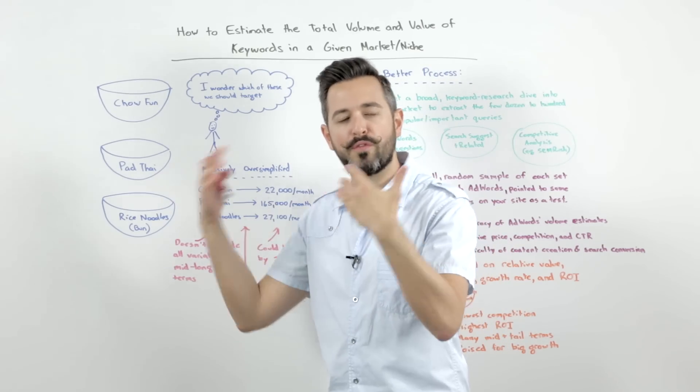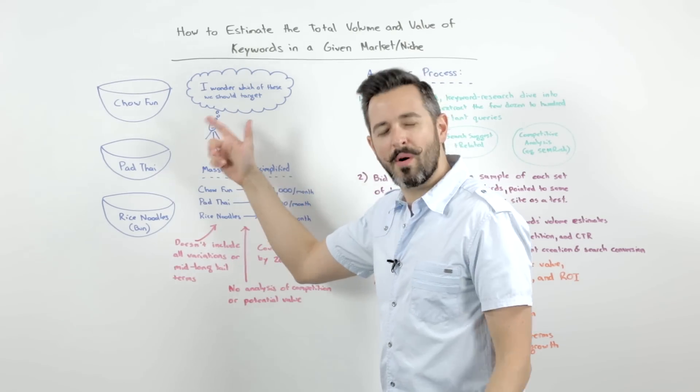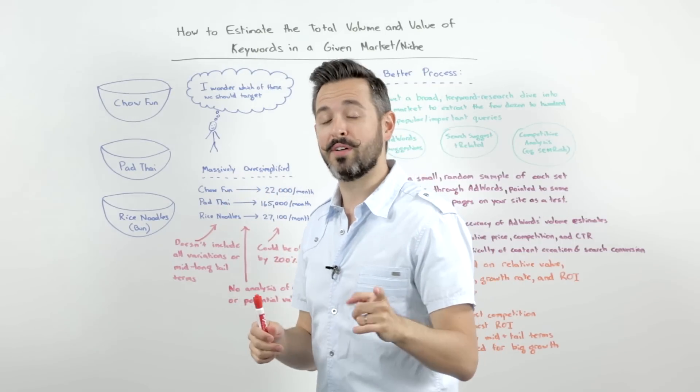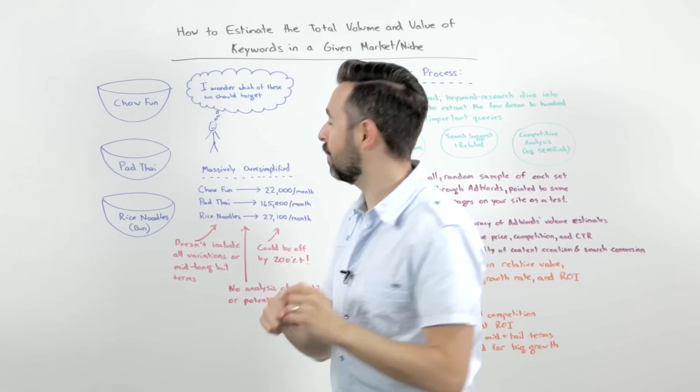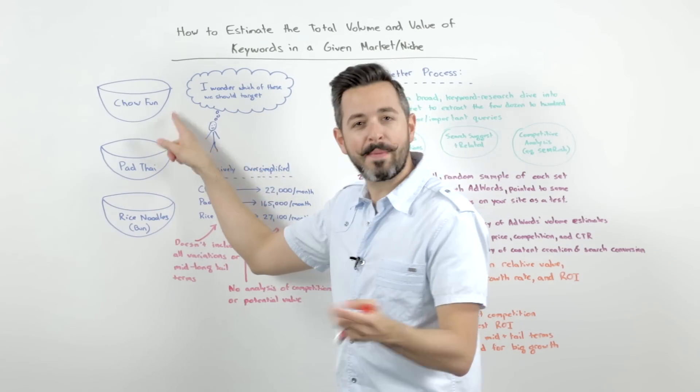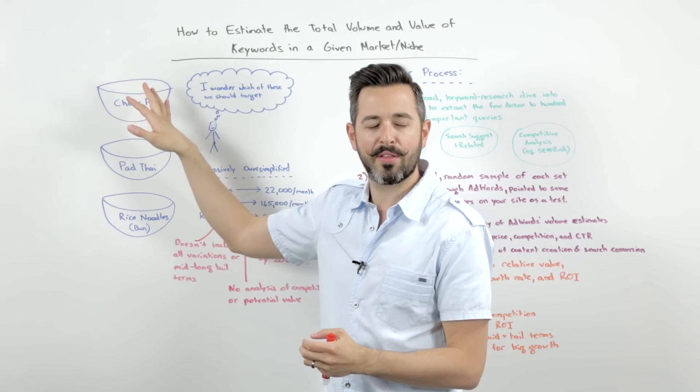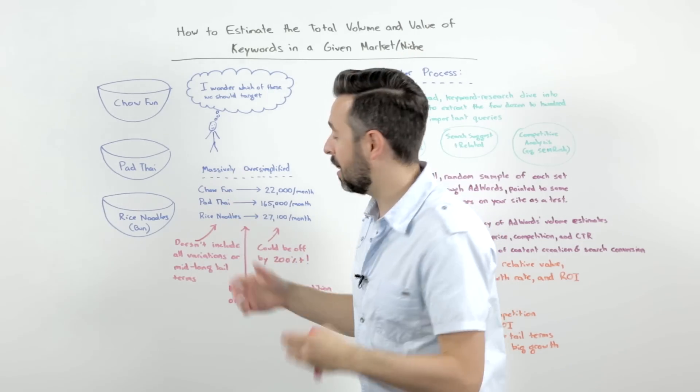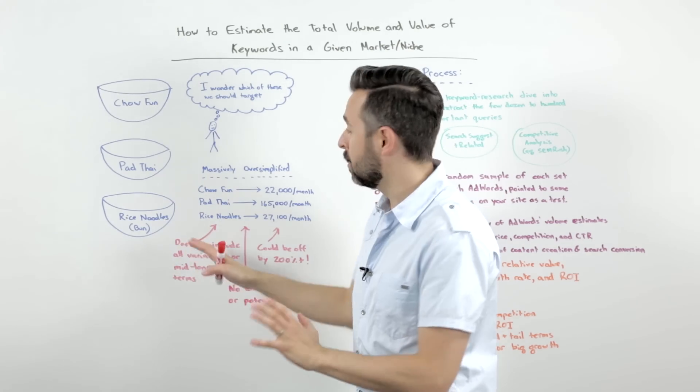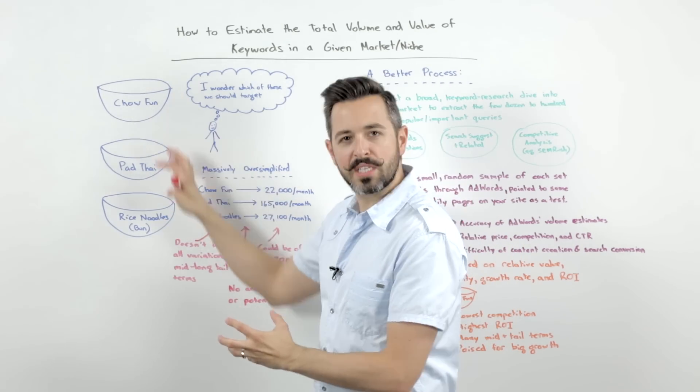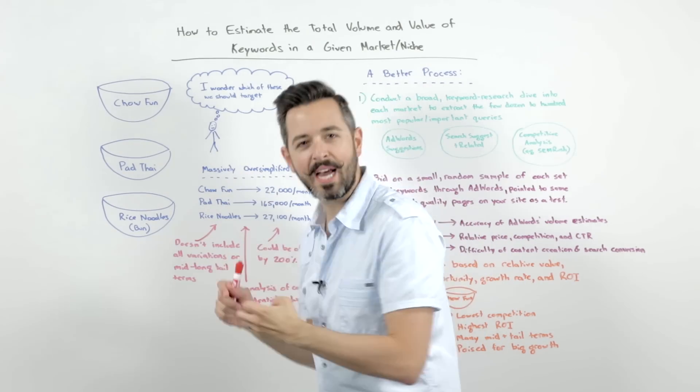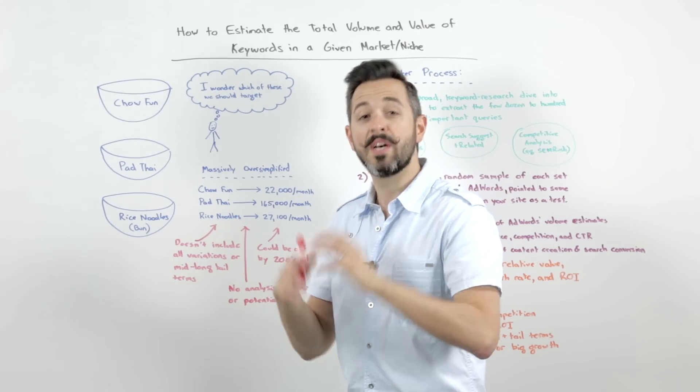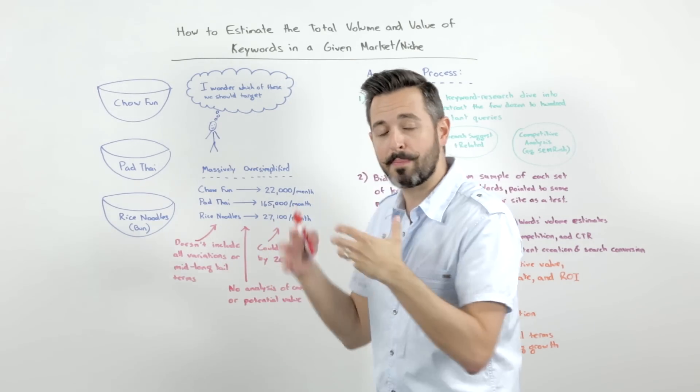Let's say I'm a recipe site or a food site, and I want to get into the Asian noodle scene. I had chow fun for lunch from Trove on Capitol Hill. When you come to MozCon, you have to try them. It's awesome. So maybe I'm looking at chow fun and all the keyword sets around that Chinese noodle world. Maybe I'm looking at pad thai, which is a very popular Thai noodle, particularly in the US, and maybe Vietnamese rice noodles or bun. I'm trying to figure out which of these is the one that I should target. Should I start creating a lot of pad thai recipes, a lot of chow fun recipes? Am I going to chase the mid and long tail keywords? I'm about to invest a large amount of effort and really build up a brand around this.